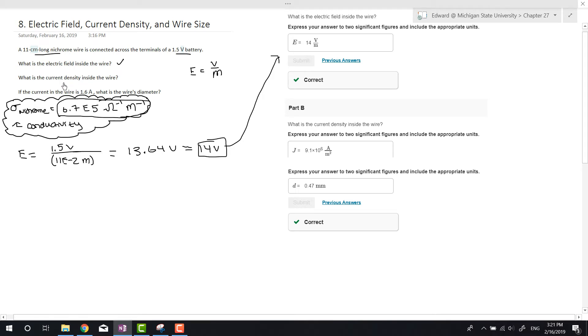Next, we need to find the current density inside the wire. Current density is J. If J equals I over A, we don't have the area because we're not given the diameter, just the length. But J also equals sigma times E. Sigma is the conductivity of nichrome, the type of metal the wire is. We already found E, so let's multiply these two together.